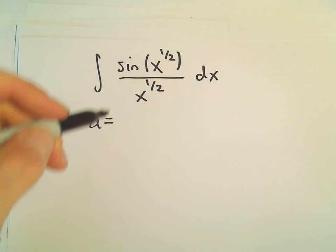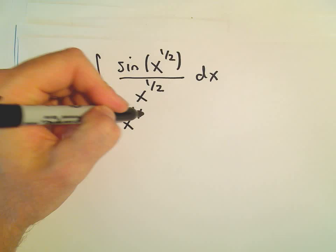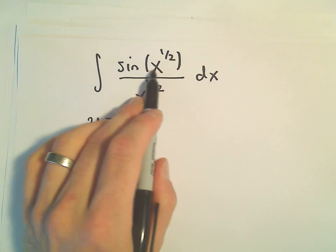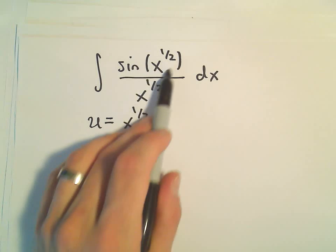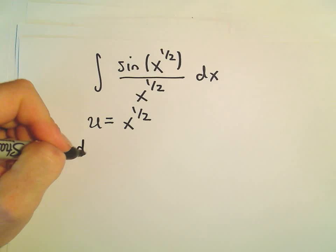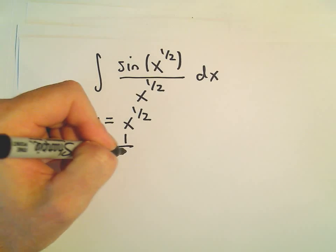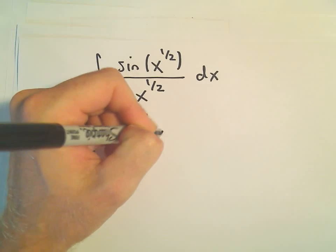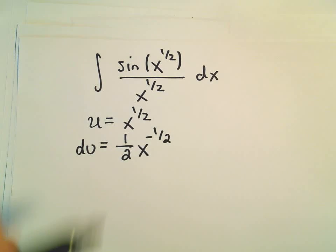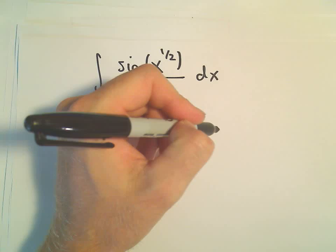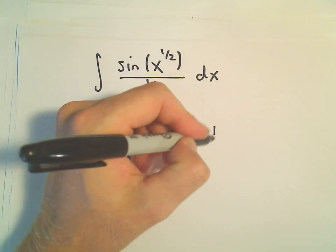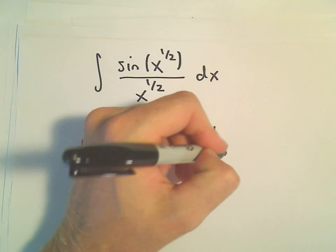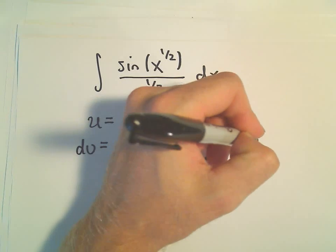But let's see. If we pick u to be our x to the 1 half, kind of the stuff inside the parentheses and kind of the same idea. This way, at least, it will make it sine of a single variable. Then our du would be 1 half x to the negative 1 half. But we can rewrite this as, I left my dx off. Let's put that in there. And then we can rewrite this as 1 over 2 x to the positive 1 half dx.